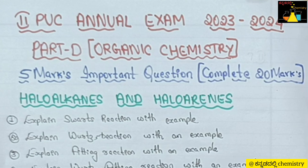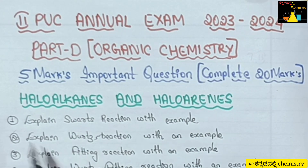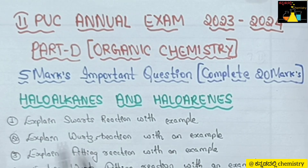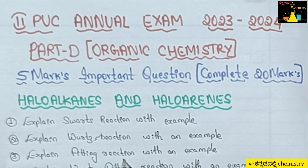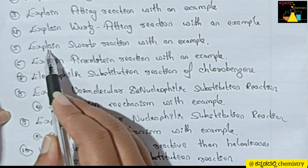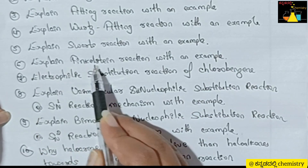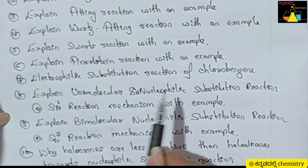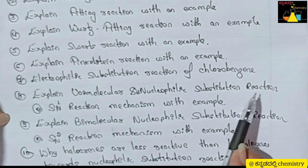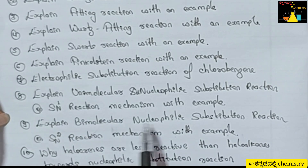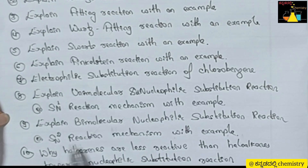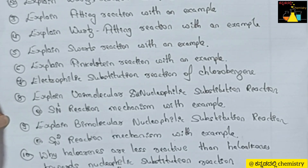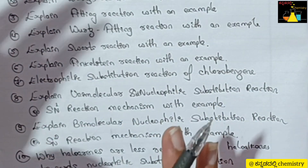For complete organic chemistry, there are 5 chapters total, and for each chapter I will explain 10 important questions worth 5 marks each. For the first 2 chapters — Alkenes and Alkynes — there are 7 important questions. This is the first question, and the probability is high that it will appear.